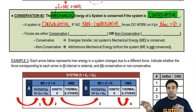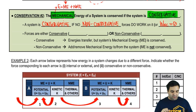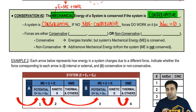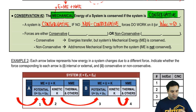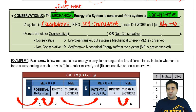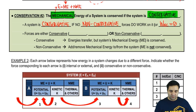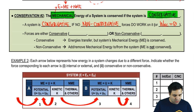Remember, we have internal forces and external forces. We also have conservative forces and non-conservative forces — so there are two ways of categorizing forces. Conservative versus non-conservative is pretty easy. For the most part, there are really only four forces you have to worry about.